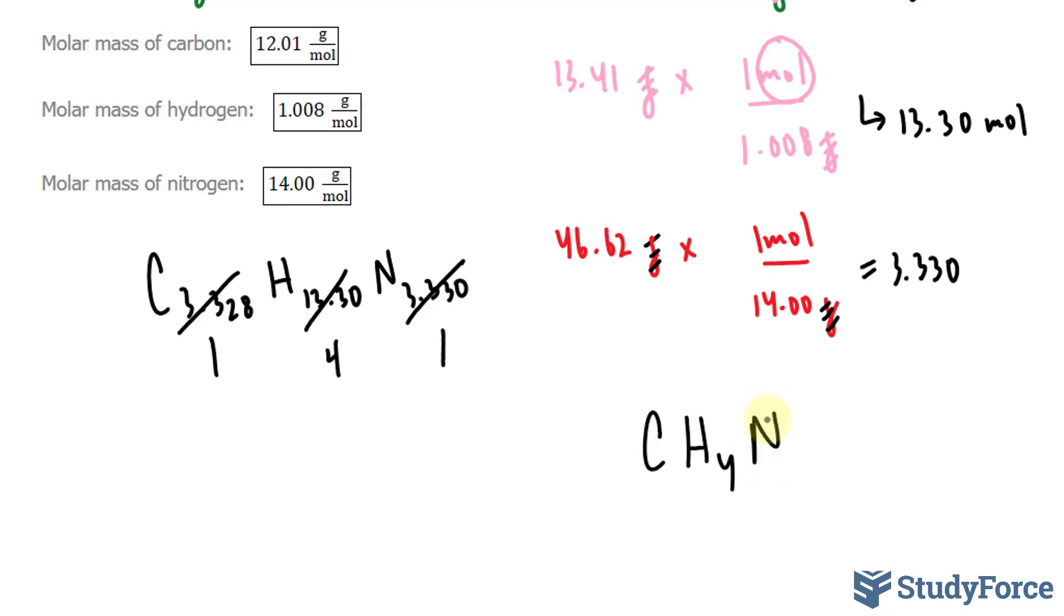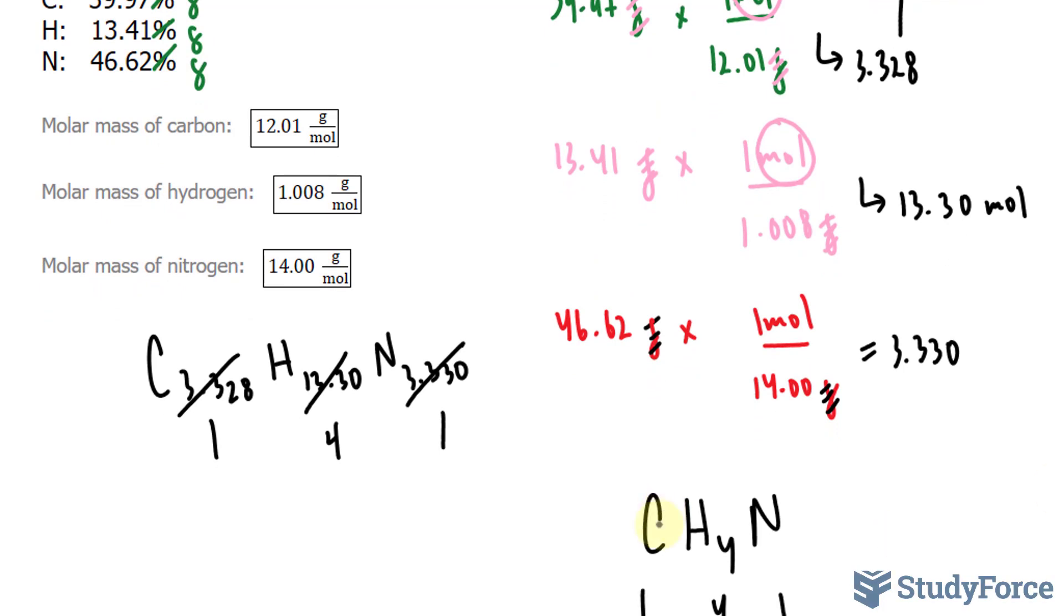Now what I have to do is find out the molar mass of this empirical formula. We have 1 mole here, we have 4 here, and we have 1 here. So let's do our calculation again. We have this number times 1, this number times 4, and this number times 1. We'll multiply these, add them up, that will give us the molar mass of the empirical formula, and then we can divide the actual molar mass with that number.